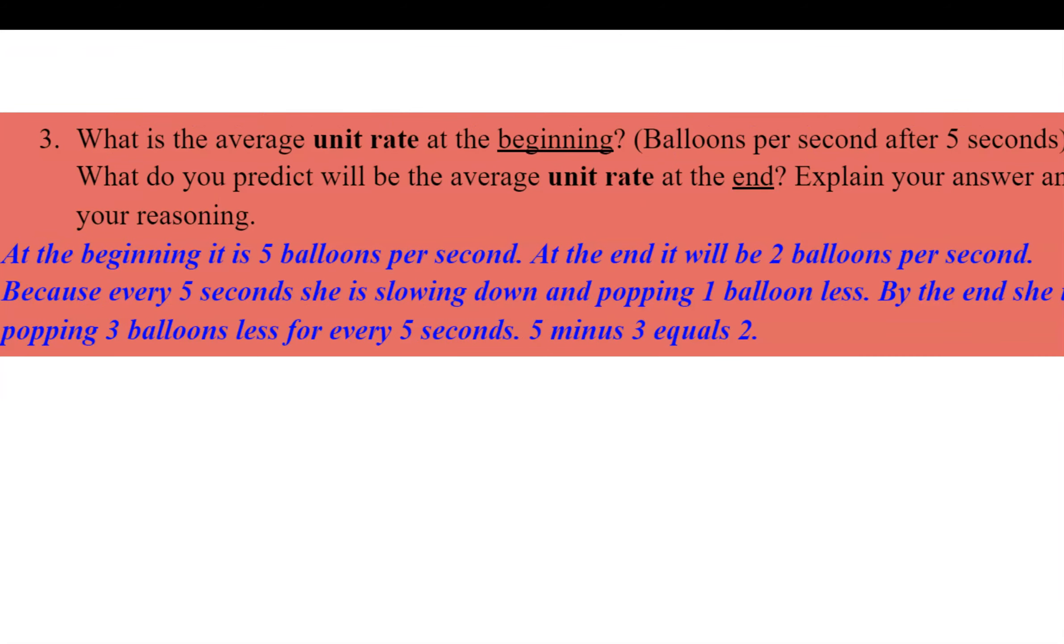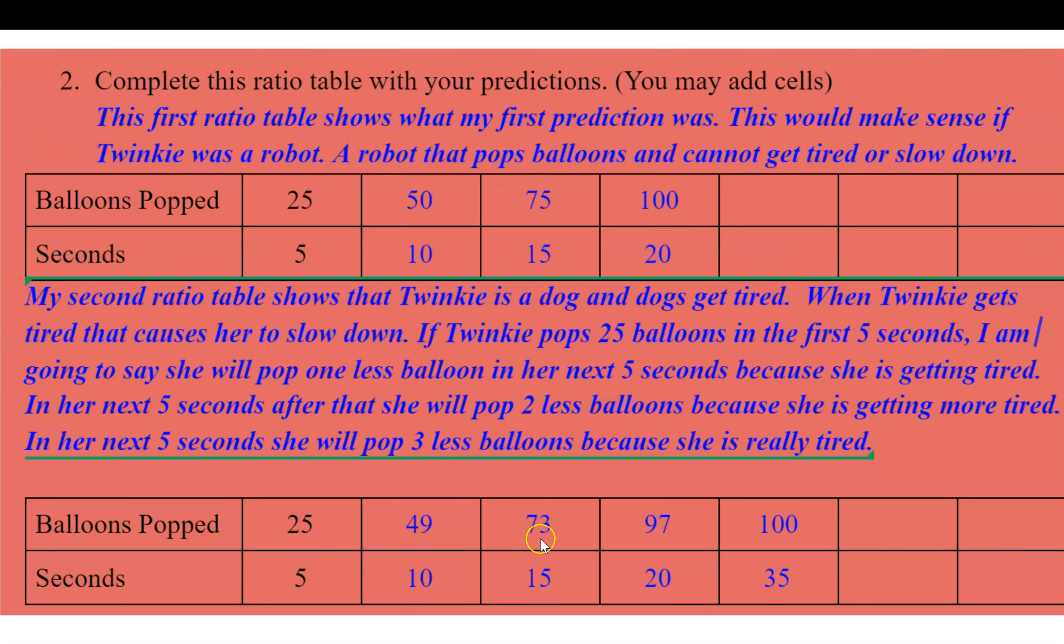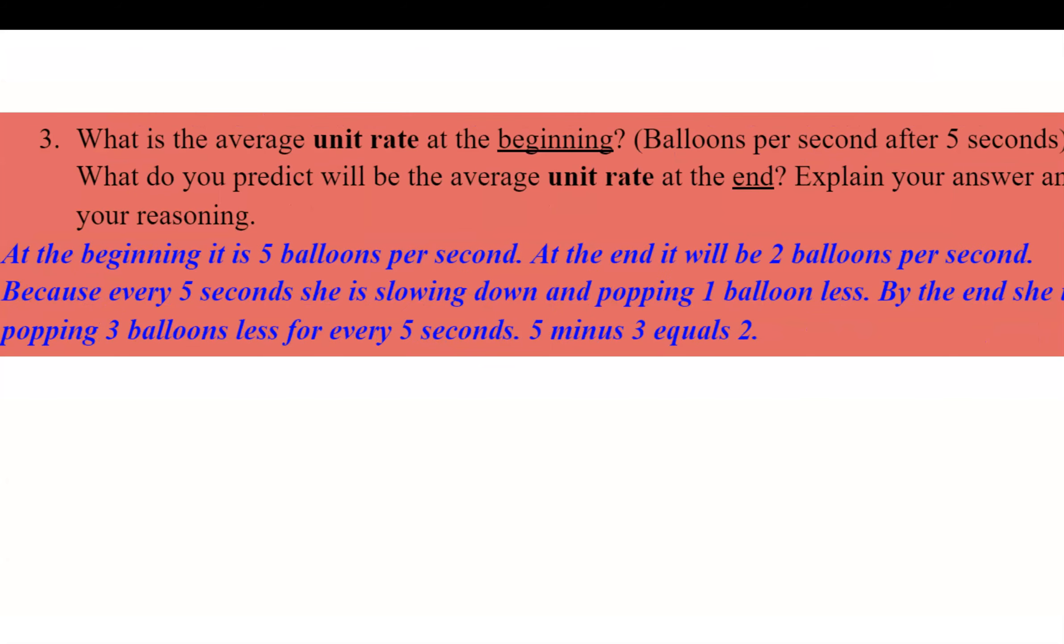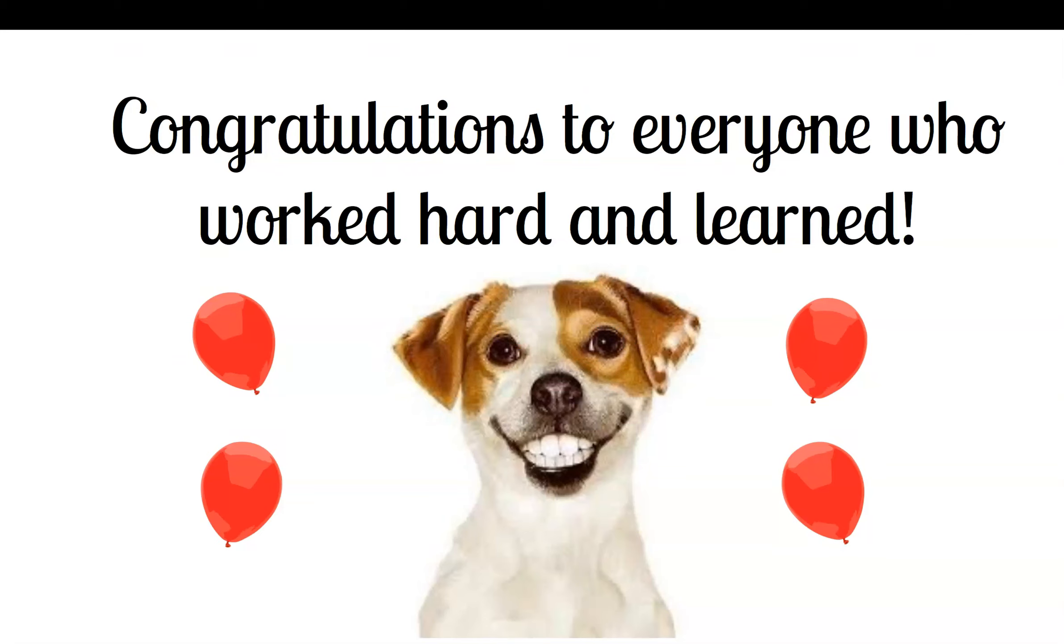And finally, at the beginning, it is five balloons per second. That's the unit rate. That's what I asked for. But then she even calculated with her new conjecture. At the end, it will be two balloons per second because every five seconds, she's slowing down and popping one balloon less. By the end, she will be popping the balloons less every five seconds. And you can see that she came up with, by using her reasoning, 35 seconds. The answer was 39 seconds. This is brilliant reasoning. And congratulations, Cora. That's fabulous. So I would just like to say congratulations to everyone who worked hard and learned. And we'll see you next week for a very scary math arc.